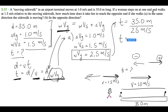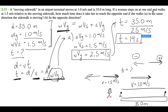Let me just double check on my calculator — I hate making dumb mistakes. This is going to be 14 seconds. So 14 seconds is how long it takes when she walks in the same direction as the moving sidewalk.